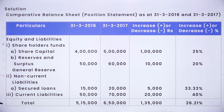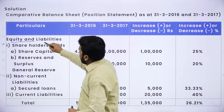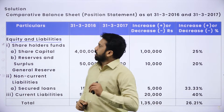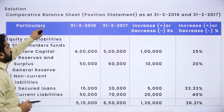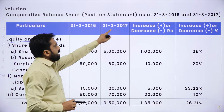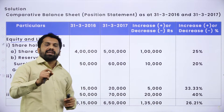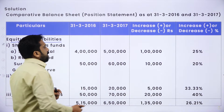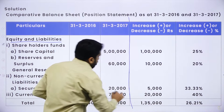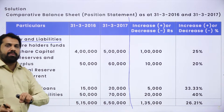Now we will complete the liability section. The heading for your answer is equity and liability. Before you start your problem, the heading is a must: Comparative Balance Sheet or Position Statement. They have given two years — 2016 and 2017 — so we write columns for 2016 and 2017. Up to this point, we just copy from the question.